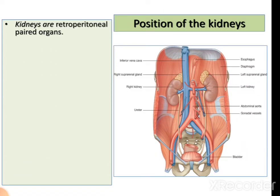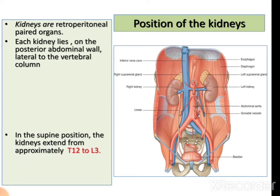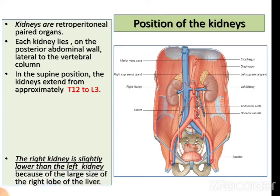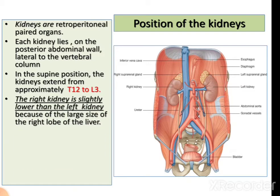First we consider the position of the kidneys. Kidneys are retroperitoneal organs. They are paired, meaning there are two kidneys in our body, and retroperitoneal means they are located behind the peritoneal fold. Each kidney lies on the posterior abdominal wall lateral to the vertebral column. In the supine position, the kidney extends from T12 to L3.